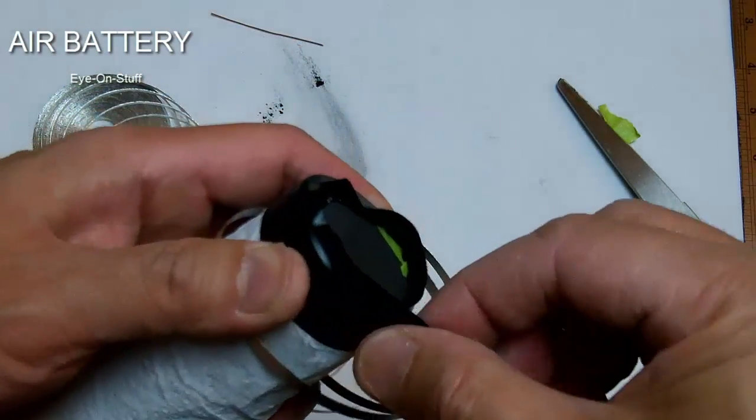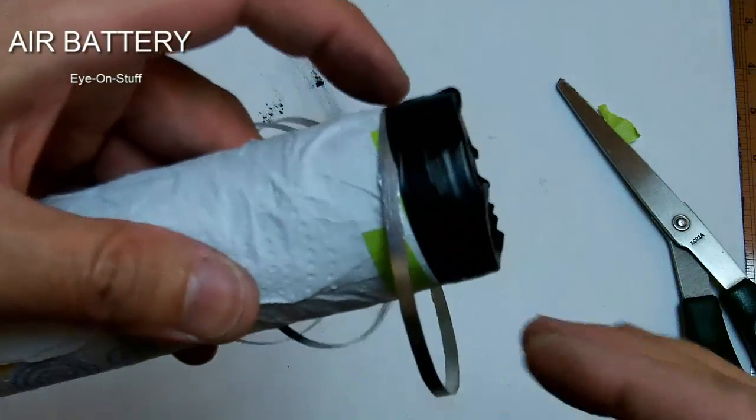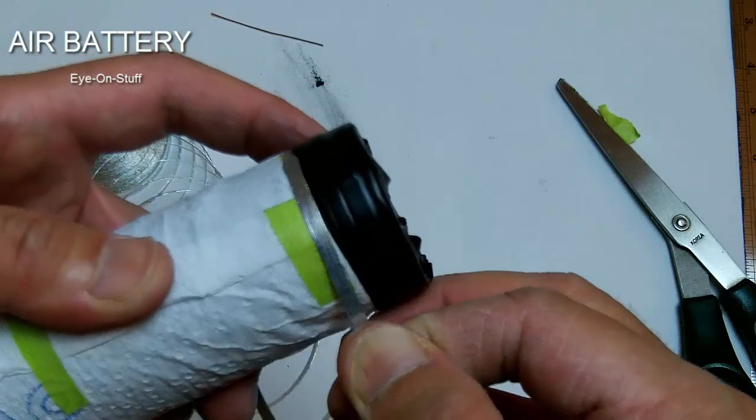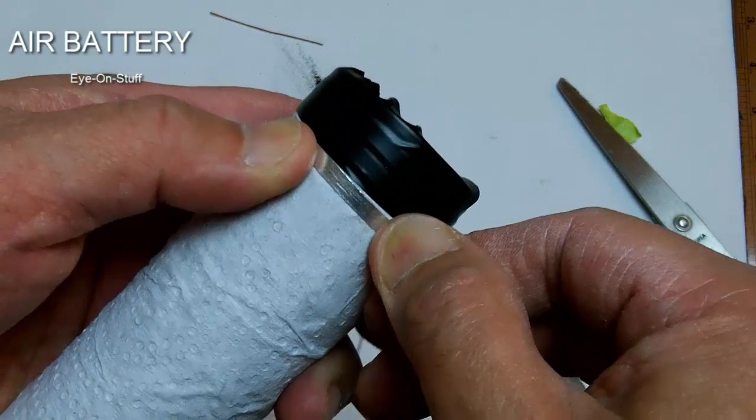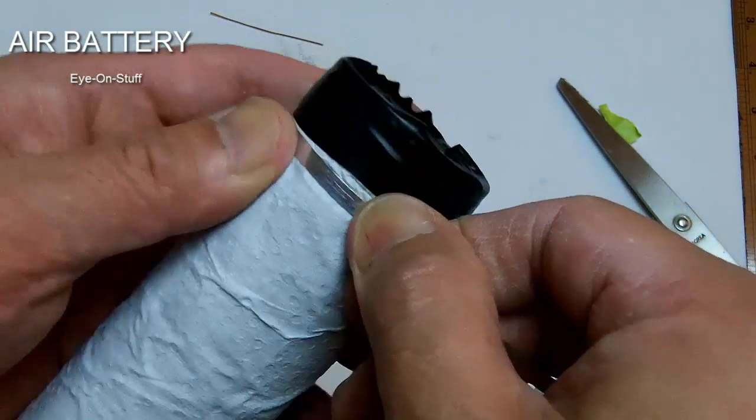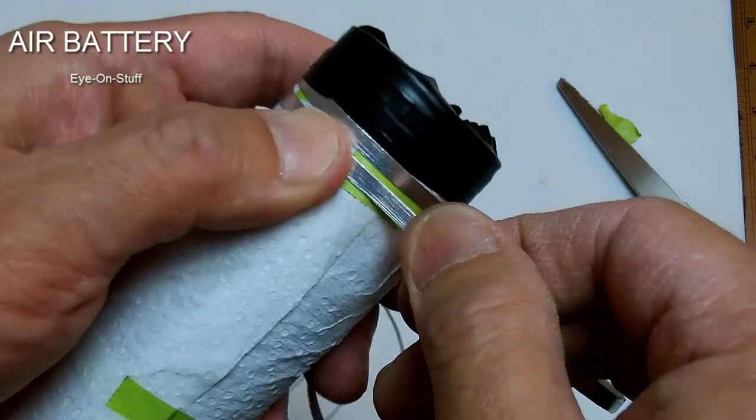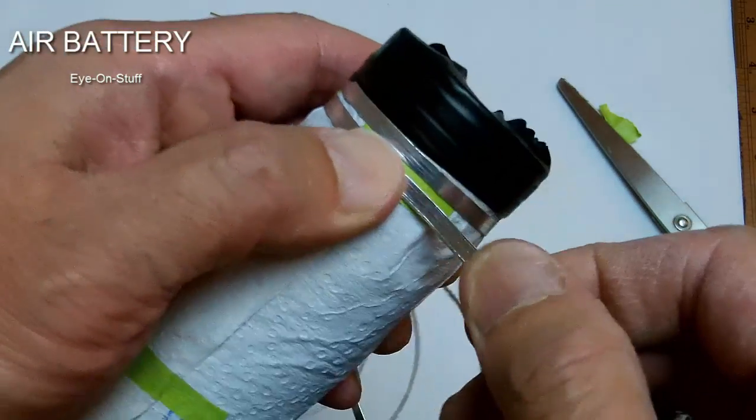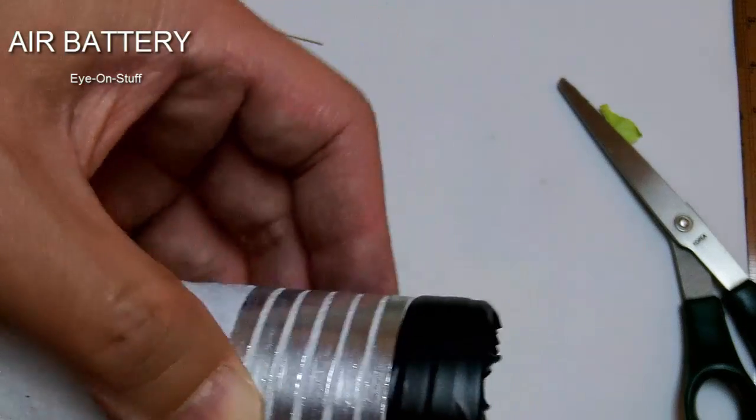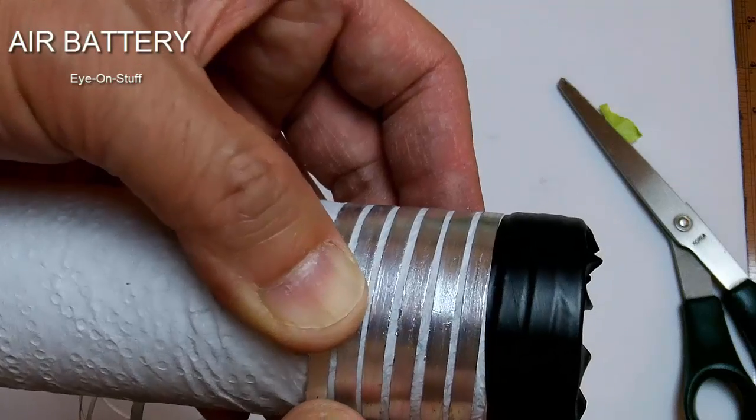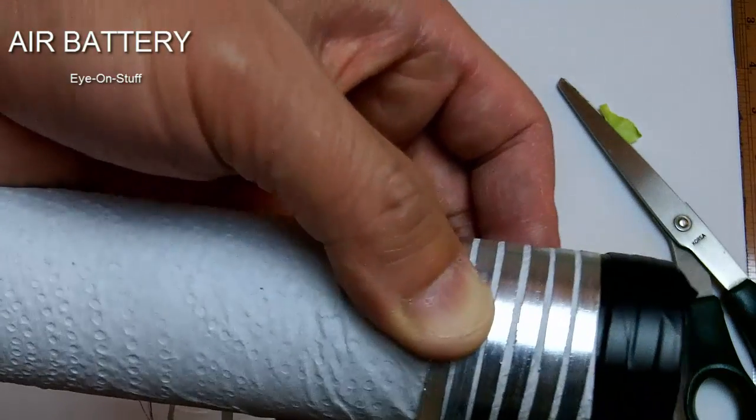Hopefully you can see this. Now I can continue wrapping the magnesium ribbon around without actually touching the other portions of the ribbon. So this is how far I've gone. You want to wrap it as tight as possible. And you don't want to tear the paper towel as well because you do want to insulate it from the carbon rod.